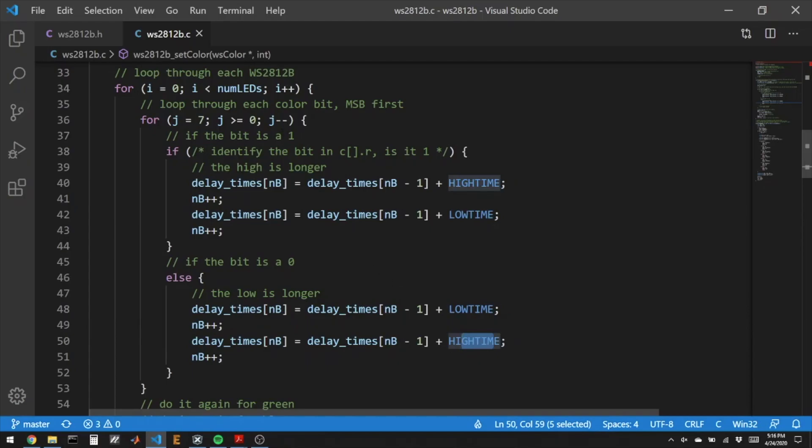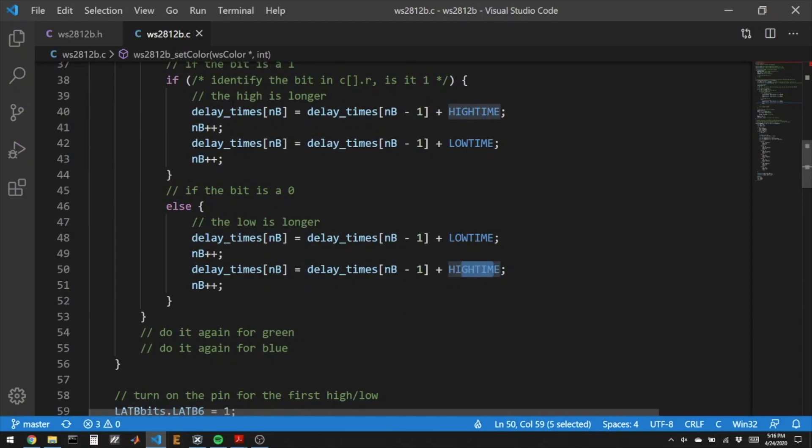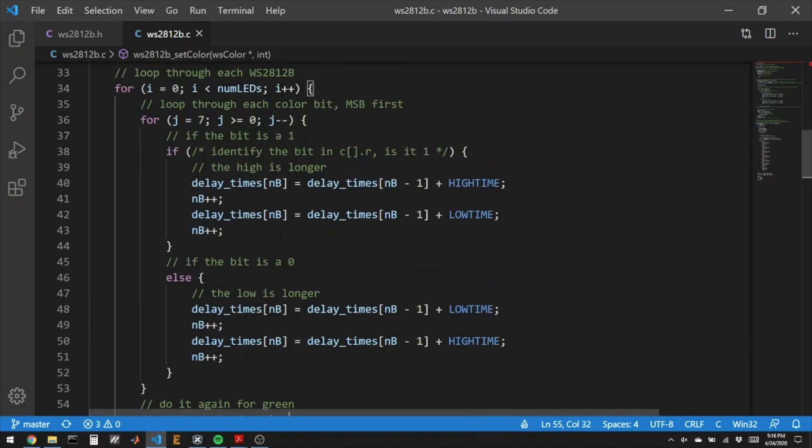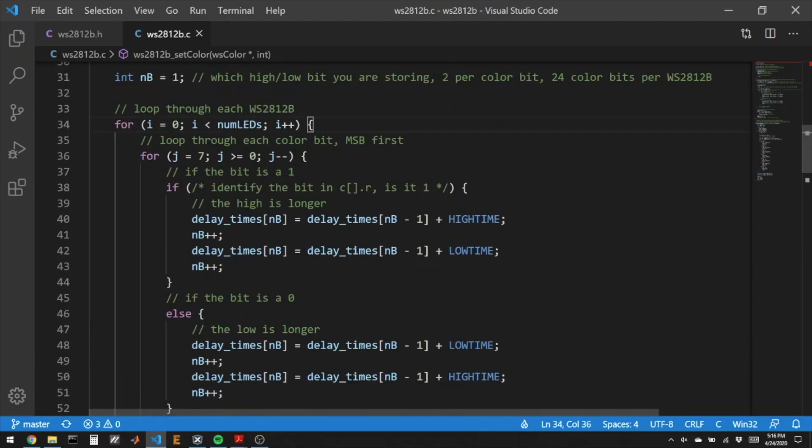We need to loop through every bit in red, and then once you've completed this if-else statement, copy it and do it again for green, and then do it again for blue. That'll be 24 bits that represents the first LED, and then this will loop over all of the LEDs.